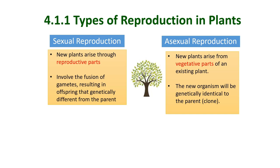There are two modes of reproduction in plants: sexual reproduction and asexual reproduction. Sexual reproduction involves new plants arising through reproductive parts and involves the fusion of gametes, resulting in offspring that are genetically different from the parent. Asexual reproduction involves new plants arising from vegetative parts of an existing plant, and the new organism will be genetically identical to the parent.